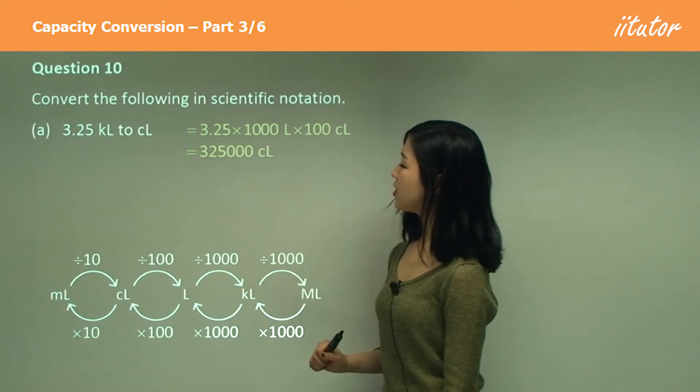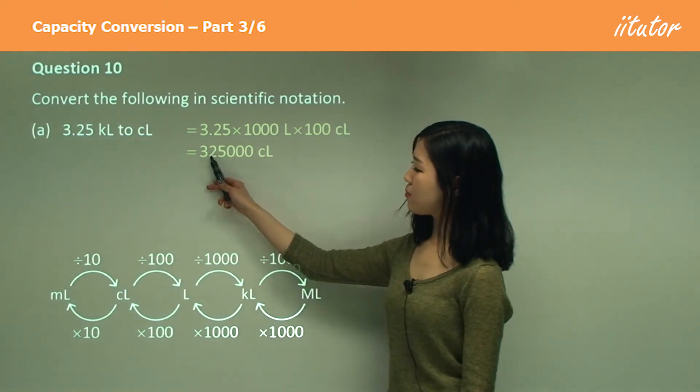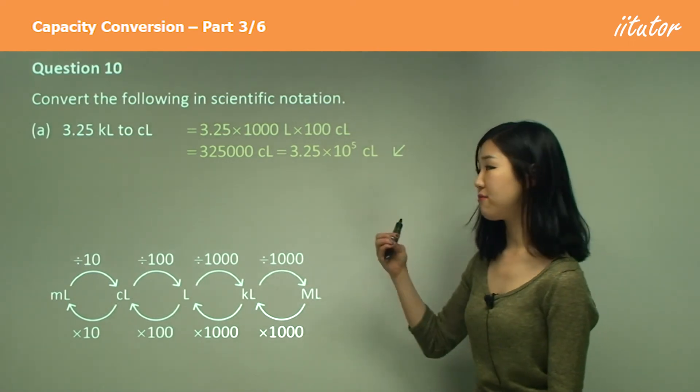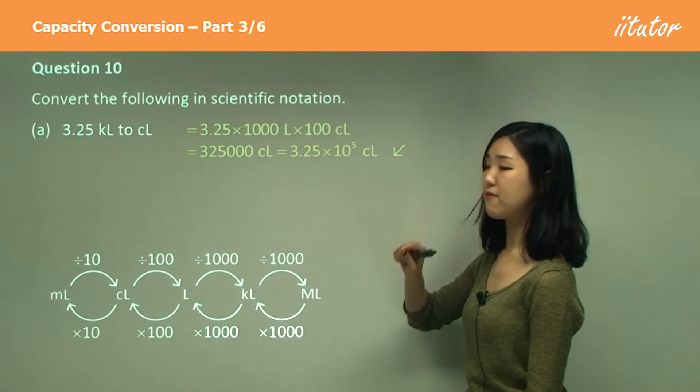And then, we want to put into scientific notation. So put the decimal in front of the three, and we have multiplied by 10 to the power of five, because we go to the right by five places.